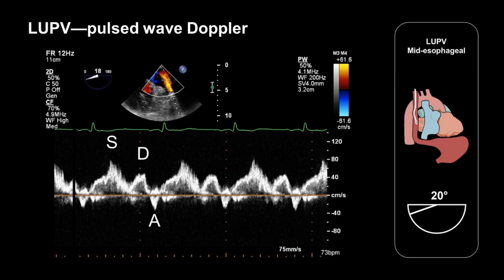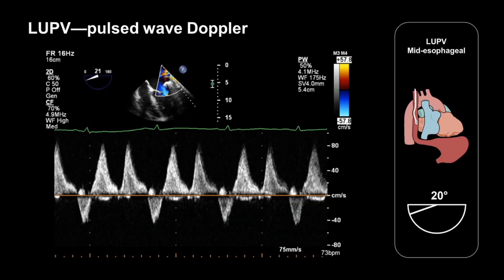If a patient is in atrial fibrillation then they will not have an A wave. Flow patterns in the pulmonary veins can tell us a great deal about cardiovascular hemodynamics. This patient has left ventricular diastolic dysfunction and we're seeing a pseudo-normal restrictive filling pattern in their left upper pulmonary vein flow — in other words, equalization in the size of the S and D waves. Normally the S wave is taller than the D wave.